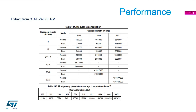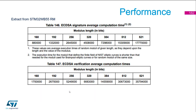Regarding performance, here is an extract from the WB reference manual. You can see the difference between normal mode and fast mode for modular exponentiation — it is quite significant and can be very interesting. For ECDSA signature and verification, these numbers are in clock cycles. As you can see, the numbers are large.